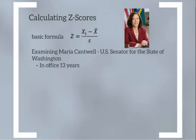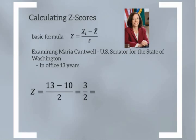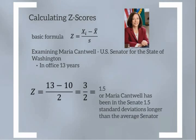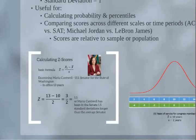Let's use a real-life example. Maria Cantwell is a U.S. Senator from the state of Washington and has served in office for 13 years. The average years in Congress is 10 with a standard deviation of 2. So we take 13 minus 10 divided by 2, which gives us 3 over 2 — a z-score of 1.5. Maria Cantwell has been in the Senate 1.5 standard deviations longer than the average Senator. Because it's positive, we can tell she spent more time in Congress than the average Congressperson.